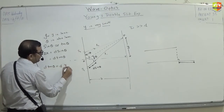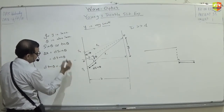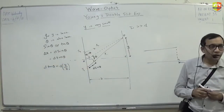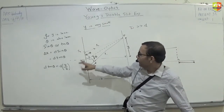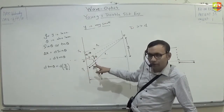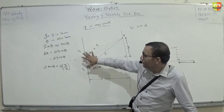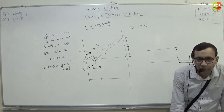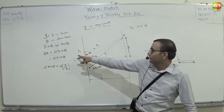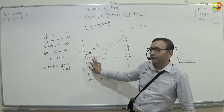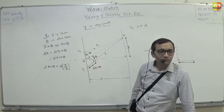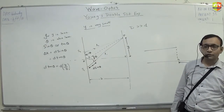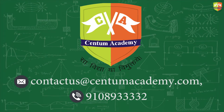Path difference = d·y/D — the same result we got earlier. So if you find the path difference by dropping a perpendicular, you get the same formula every time. Do not memorize any formula; always start from scratch by dropping the perpendicular and finding the path difference like this.